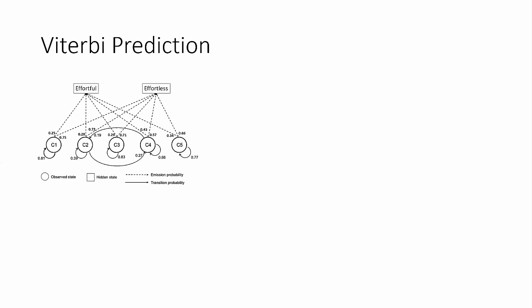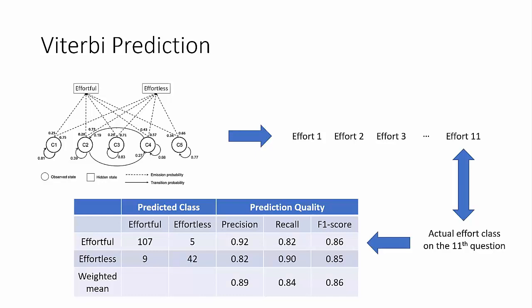Once we have created this hidden Markov model, we used Viterbi algorithm, which gives us the most probable sequence of effort categories. We computed a sequence of 11 every time by training it with 10 previous questions. And the 11th answer was our prediction. And we matched it with the actual effort class on the 11th question. And we iterated over this for all the participants. And we came up with our confusion matrix. And we can see that this gives us a fairly high precision and recall values.